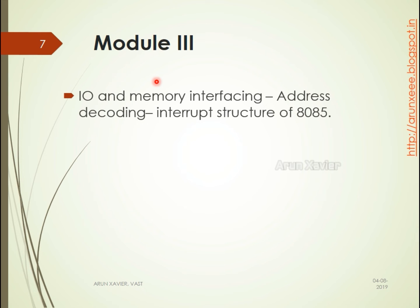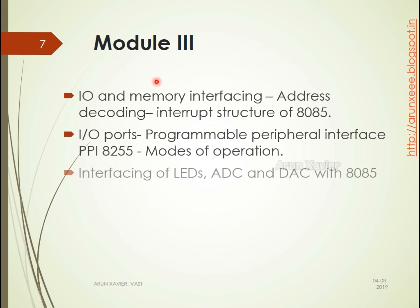In the third module we go into interfacing and the interrupt structures of 8085. The first part of Module 3 covers the different interrupts used in 8085. Then a PPI IC called 8255, its block diagram, and the different modes it operates in. We also cover how to interface ADC, DAC, LCDs, and LEDs with the 8085.